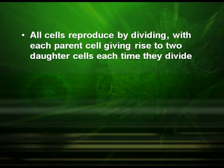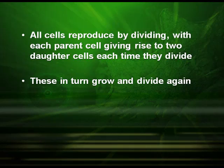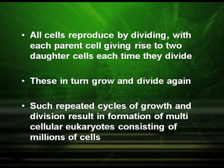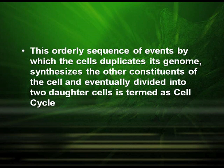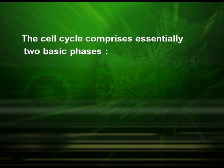All cells reproduce by dividing, with each parent cell giving rise to two daughter cells each time they divide. These in turn grow and divide again. Such repeated cycles of growth and division result in formation of multicellular eukaryotes consisting of millions of cells. This orderly sequence of events by which the cell duplicates its genome, synthesizes the other constituents of the cell, and eventually divides into two daughter cells is termed as the cell cycle. The cell cycle comprises essentially two basic phases.